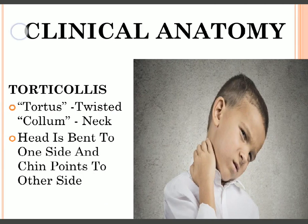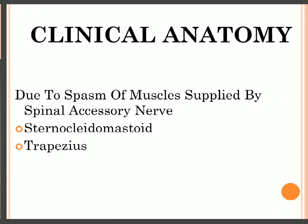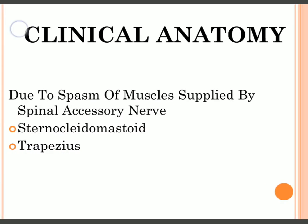A very common clinical condition associated with spasm of this muscle is torticollis. 'Tortuous' means twisted and 'collis' in anatomy refers to the neck, so torticollis means a twisted neck. In this condition the head is bent to one side, the chin points to the opposite side, and there is great stiffness, restricted movement, and excessive pain. It is caused by spasm of the sternocleidomastoid muscle, which is supplied by the spinal accessory nerve.